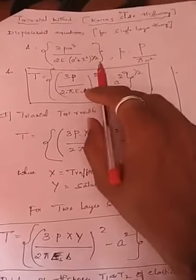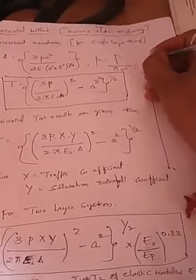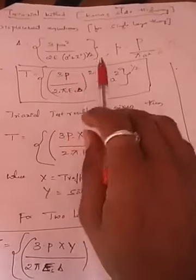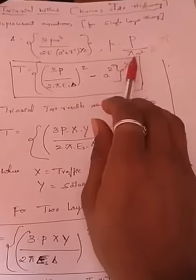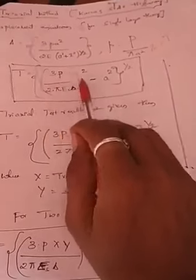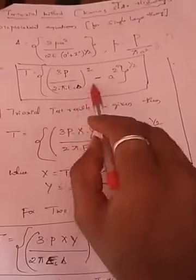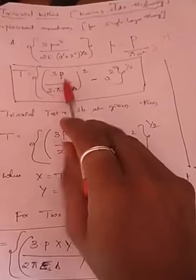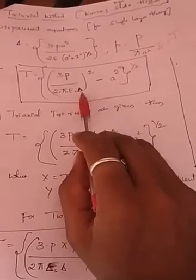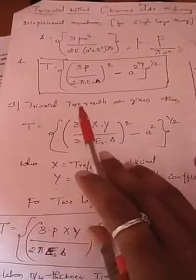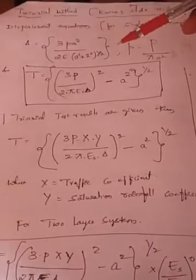The method is based on the assumption that the pavement is incompressible, so z itself becomes the thickness of the pavement T. Rescheduling the equation and substituting small p equal to capital P divided by pi·a², we get: T equals the square root of [(3P divided by 2·pi·E_s·delta)² minus a²]. Here capital P is wheel load, E is modulus of elasticity of the subgrade, delta is deflection, and a is radius of contact area.